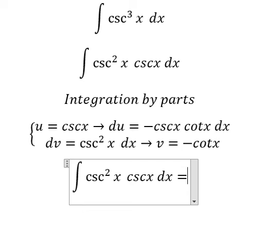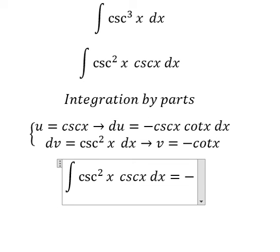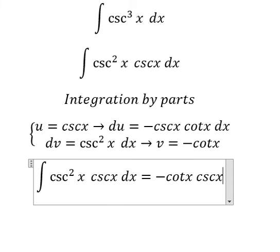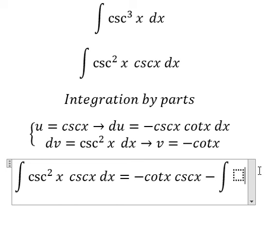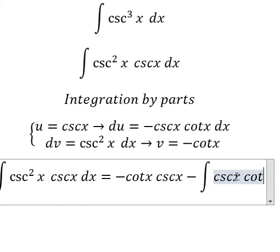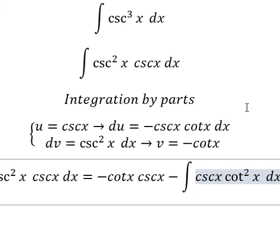So we have u multiplied by v, so we have negative cotangent x cosecant x. The u multiplied by v, negative negative they will cancel, but we have another negative here, so we have negative and we have the integration cosecant x cotangent squared x dx.